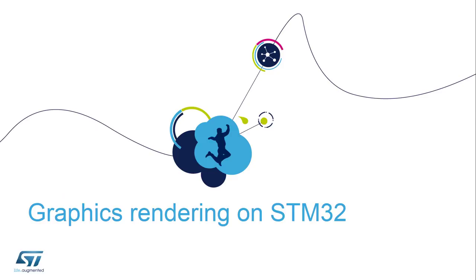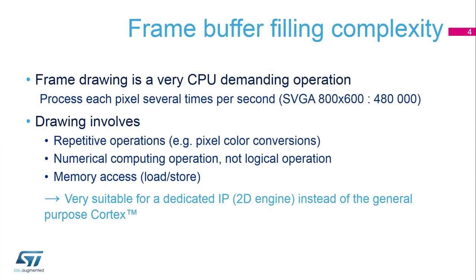What does graphics rendering mean on embedded platforms? The framebuffer is the image that will be sent directly to the display, but before sending it, this framebuffer must be created. This process is called frame drawing, and it's a very CPU demanding operation. It involves processing each pixel several times per second, and for an SVGA definition, it means almost 500,000 pixels. The drawing involves repetitive operations, for example pixel color conversions — only numerical computing operations, not logical ones — and involves a lot of memory accesses, both reading and writing.